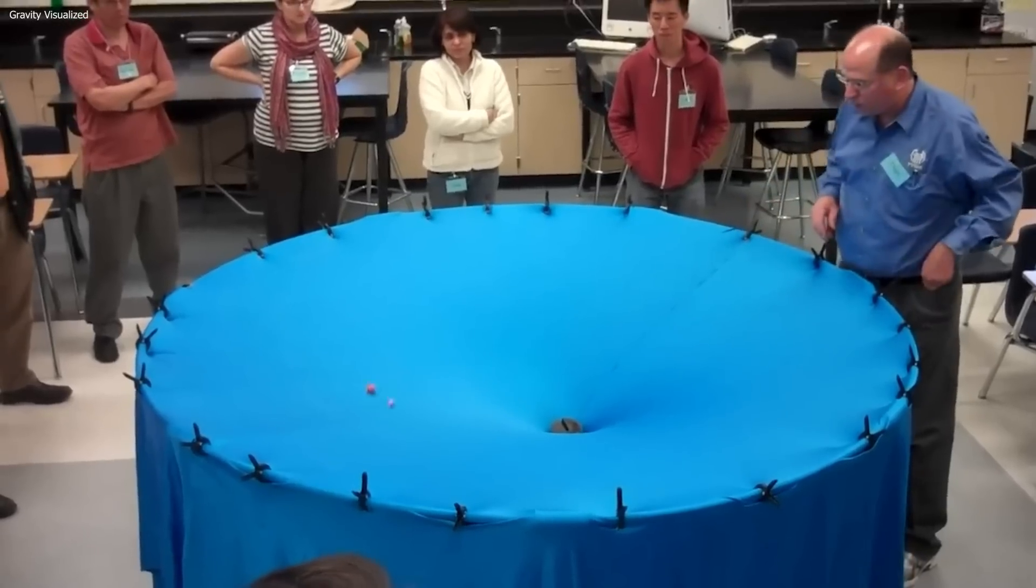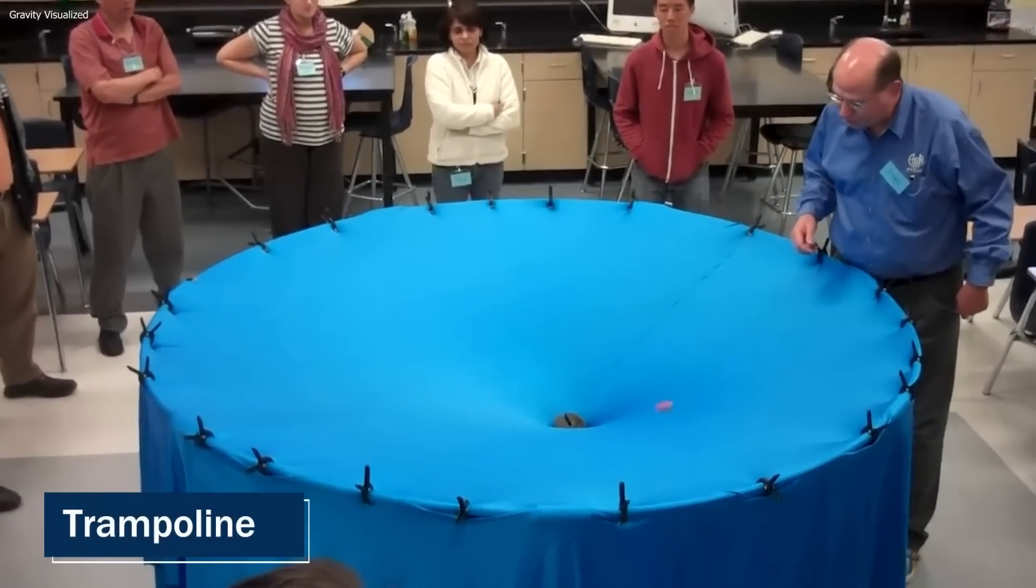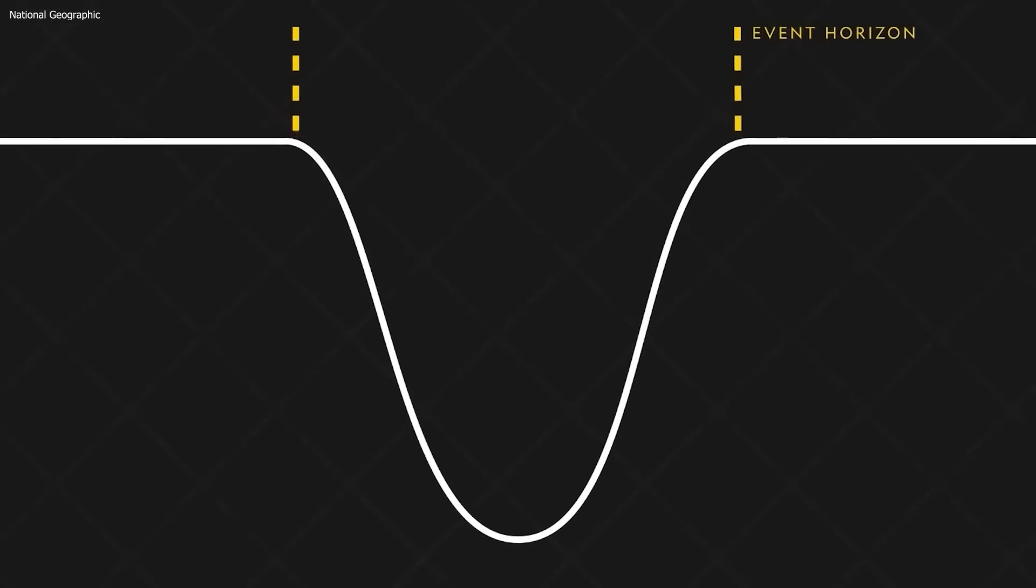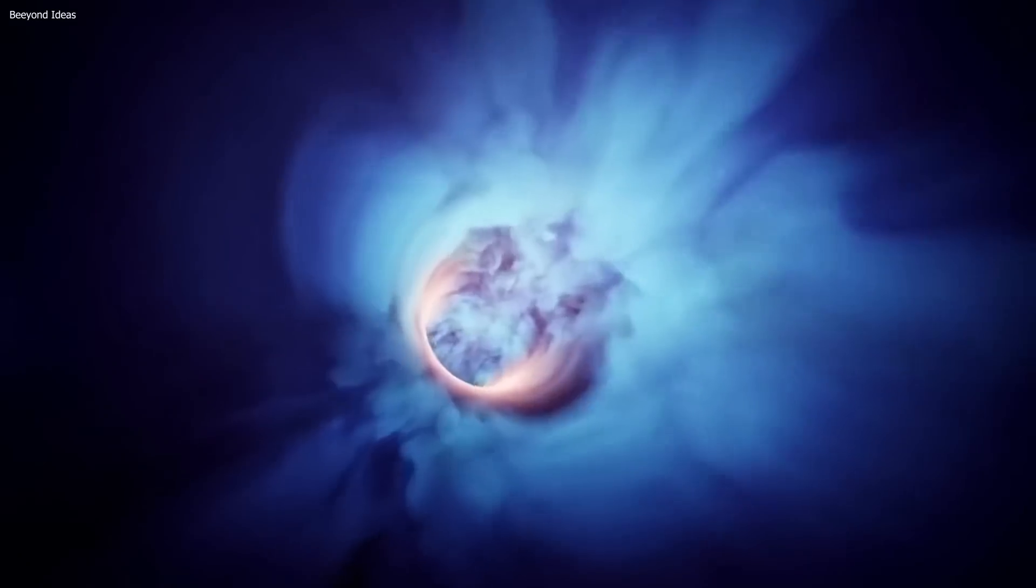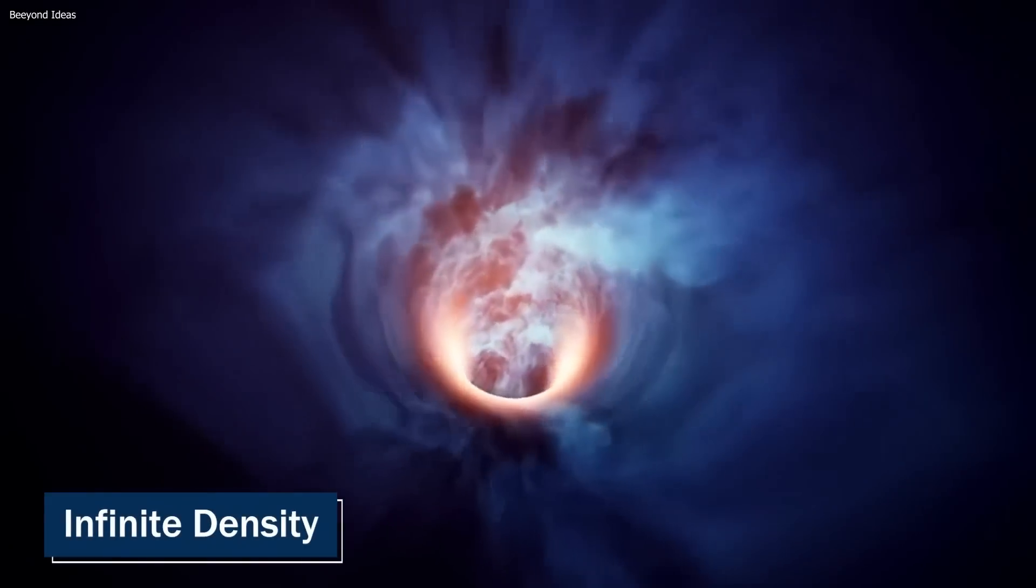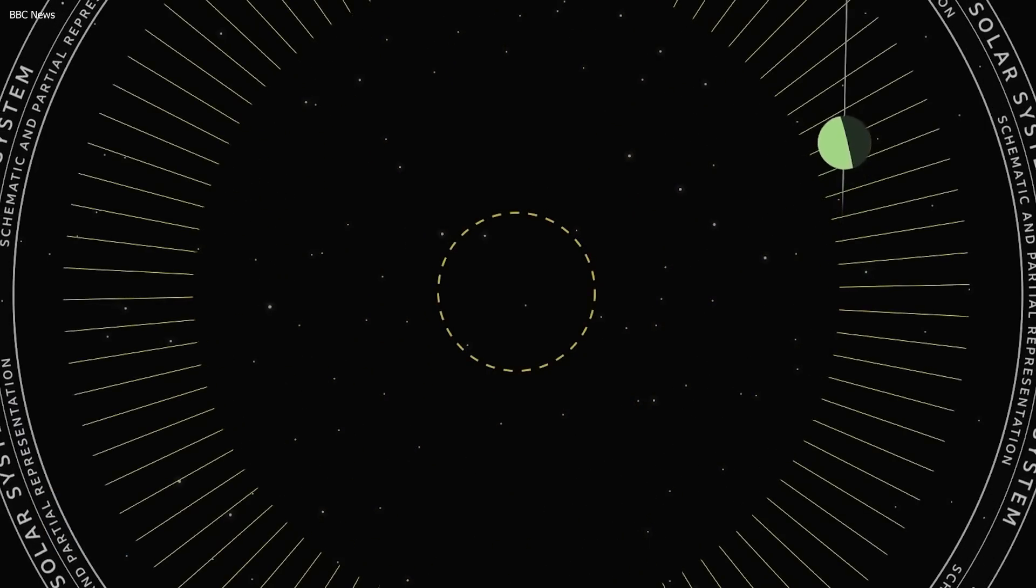If we were to visualize this concept, it would look like the surface of a trampoline with a bowling ball placed on it. The ball causes the surface to sag, pulling smaller objects into the dip. Black holes work in the same way, but they have an infinite density, creating an abyss in space-time that is nearly impossible to fathom.